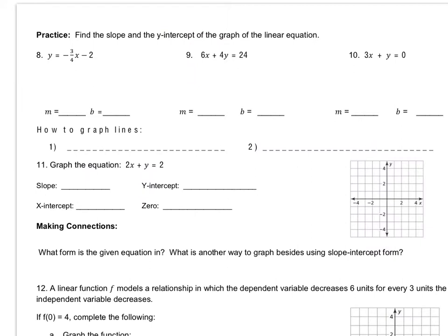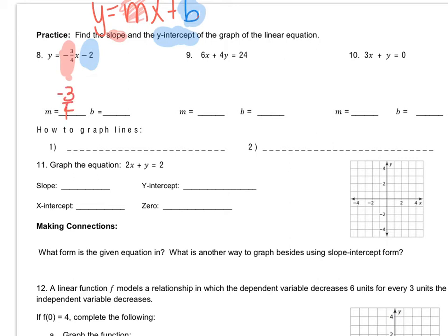Recall that the equation of a line is y equals mx plus b, where m is our slope and b is our y-intercept. If we're given an equation, finding the slope and y-intercept is easy: the slope is the number in front of x, and the y-intercept is the constant term. For example, m equals negative three-fourths and b gives the ordered pair (0, -2).